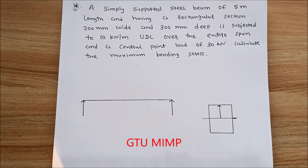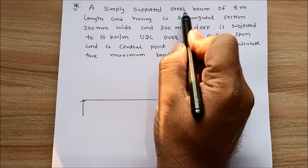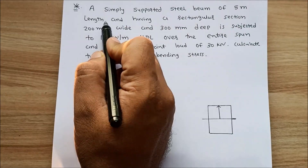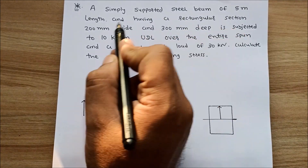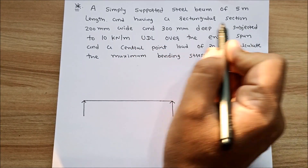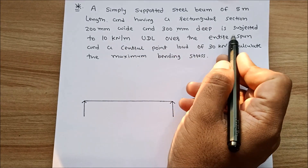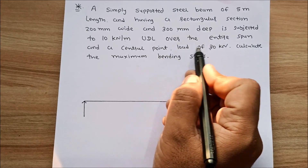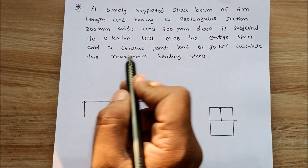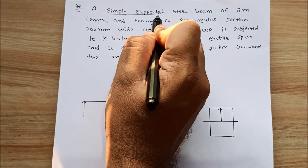Hello friends, today we solve a numerical related to bending stresses in beams. In our question, data is given: a simply supported steel beam of 5m length having a rectangular section 200mm wide and 300mm deep is subjected to 10kN per meter UDL over the entire span and a central point load of 30kN. We have to calculate the maximum bending stress.